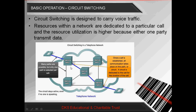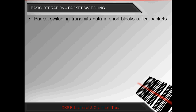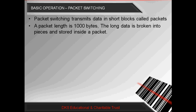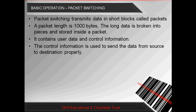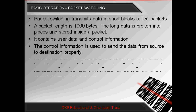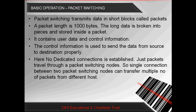To avoid this problem, a new concept came called Packet Switching. Packet Switching transmits data in short blocks called Packets. A packet length is normally 1000 bytes. If the user wants to send long data, then the long data is broken into small pieces and stored inside a packet. A packet normally contains user data and control information. The control information is used to send data from source to destination properly, and may include destination IP address, source IP address, and other control-related information.